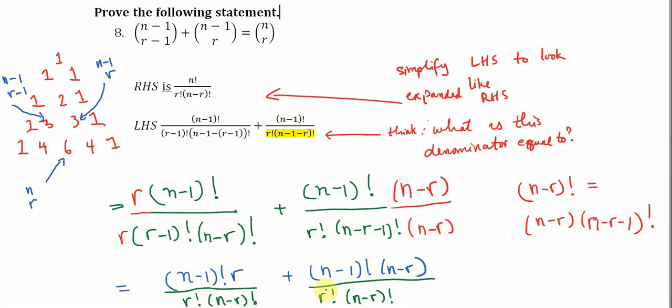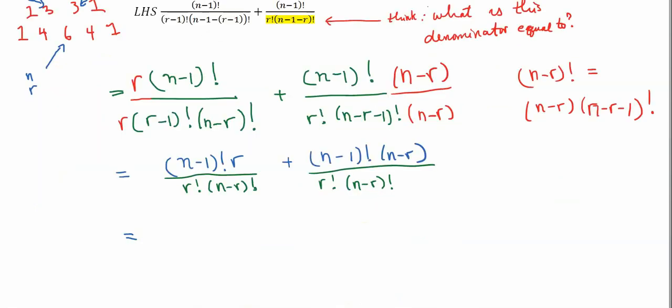And so what we can do is we can combine the fraction together. Now in combining the fractions together, we have n minus one factorial times r plus n minus one factorial times n minus r.